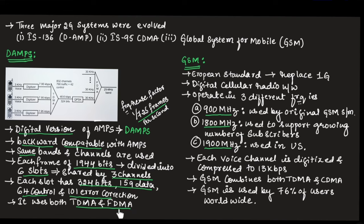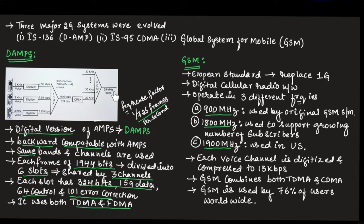DAMPS uses both TDMA and FDMA. As you can see in this diagram, this portion is similar to AMPS from first generation technology. The voice signals from the user are digitized and given to TDMA, which allots frequency bands into different time slots so each user gets a different time slot. The output of TDMA is given to QPSK, and then to FDMA, which uses 25 MHz band for uplink as well as downlink communication.